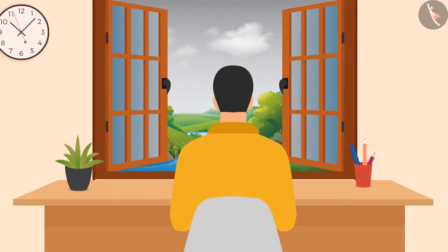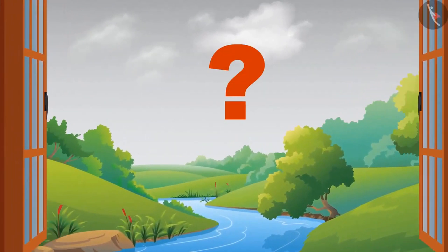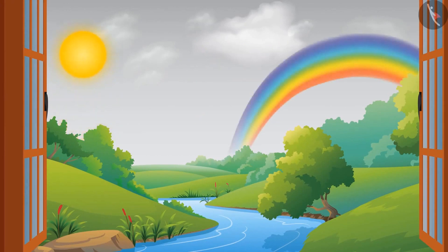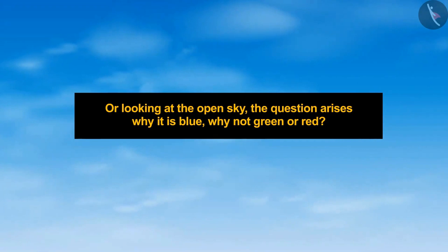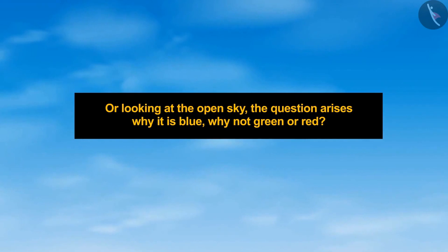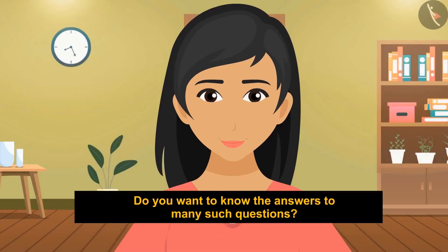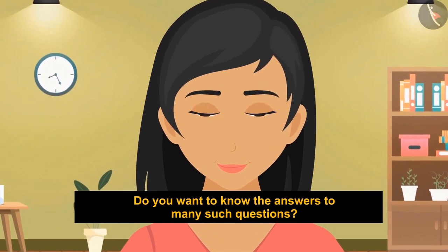Similar questions arise when I see the rainbow — what happens suddenly after the rain that we see the rainbow? Or while looking at the open sky, why is it blue? Why not green or red? Do you want to know the answers to many such questions? Then stick with the video till the end.